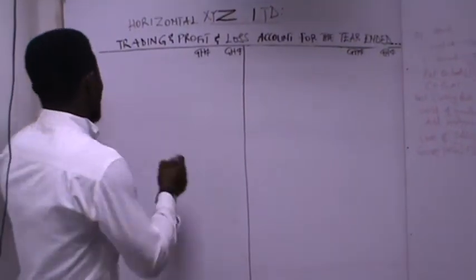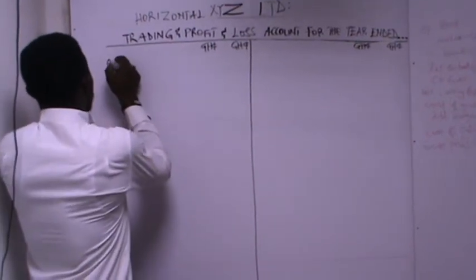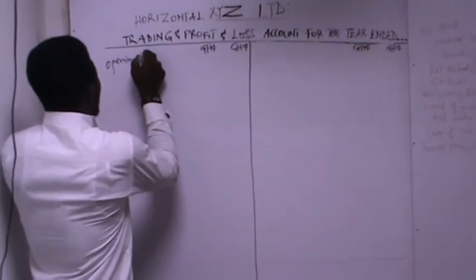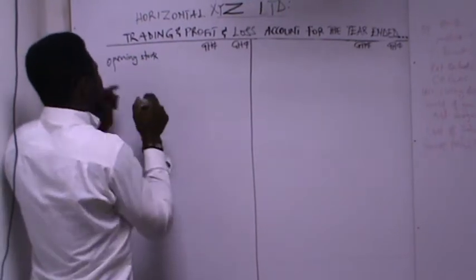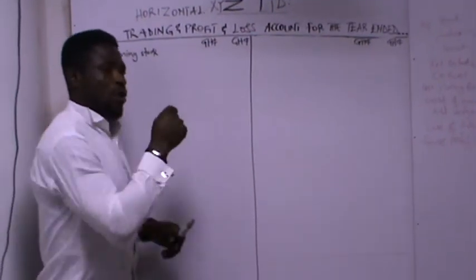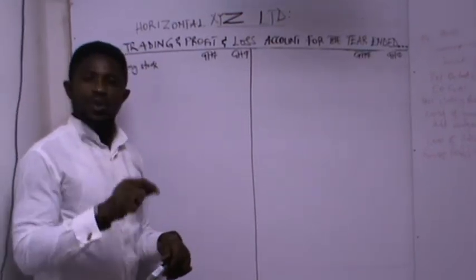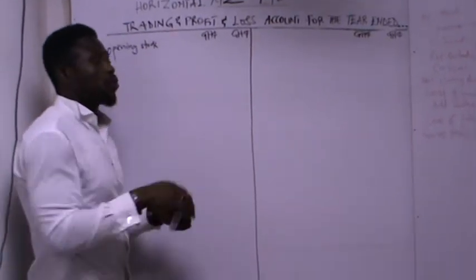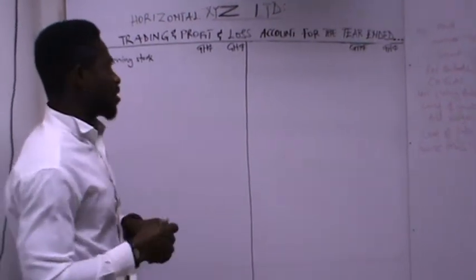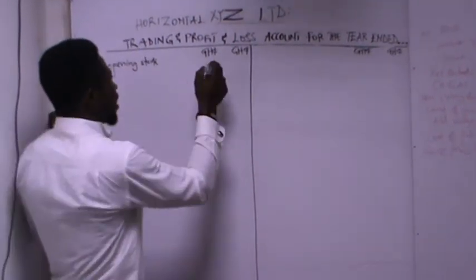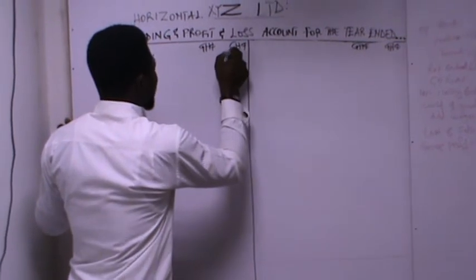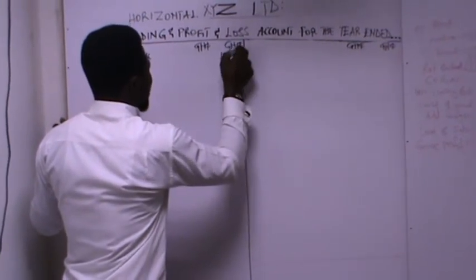So let's start. We have the opening stock. In the question you will see the opening stock in the trial balance — you take it from the trial balance and bring it here. Let's say we have the opening stock to be 10,000 Ghana cedis.